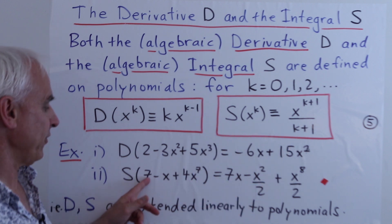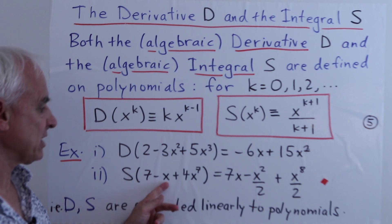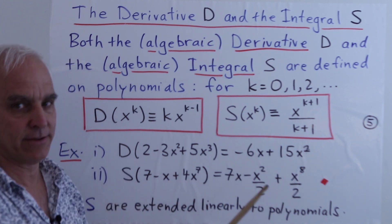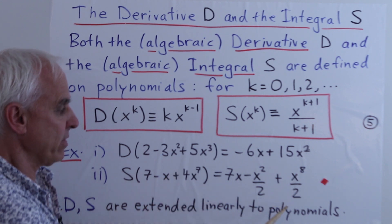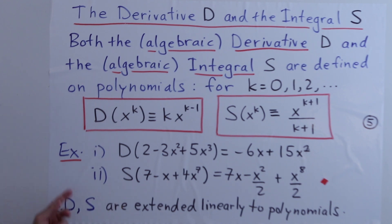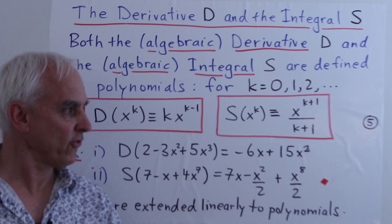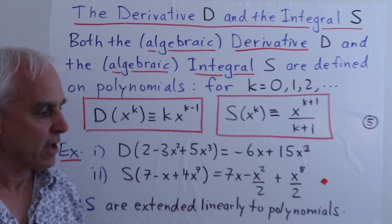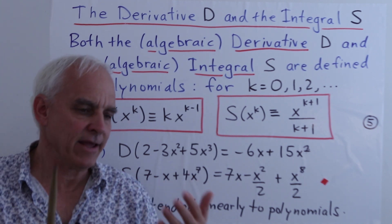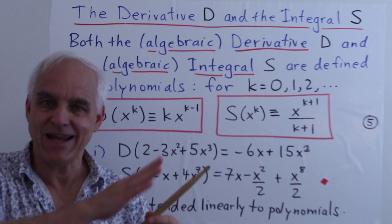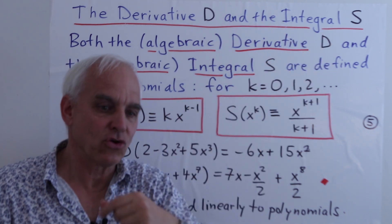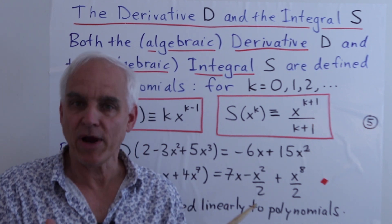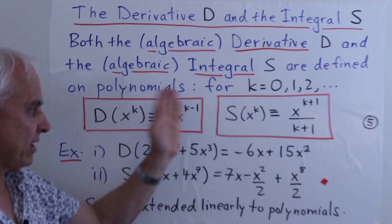D and S are extended linearly to polynomials — we know what happens on monomials and extend linearly. Notice there are no limits here; we're not saying anything about tangents or slopes, and nothing about integrals as areas under curves. This is purely an algebraic operation on polynomials, introduced using these two formulas following Faulhaber.